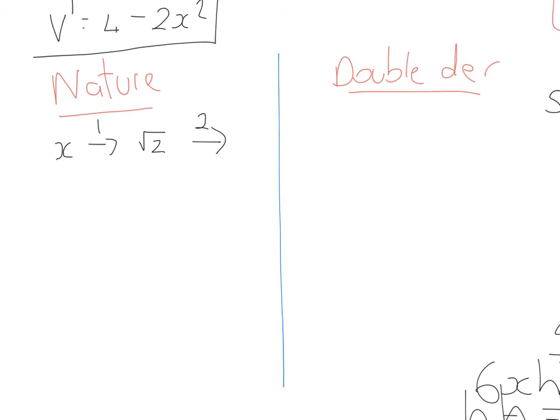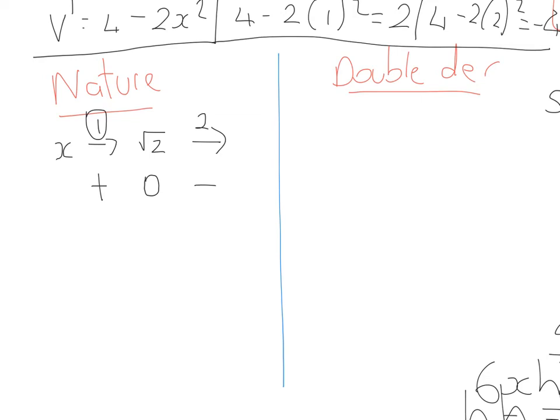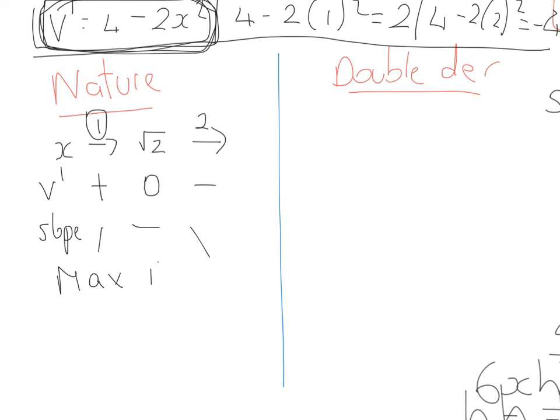So if I start with 1, that would be 4 minus 2 lots of 1². We can see that that has got a result of 2, and that is a positive result. If I then think about subbing in x equals 2, that would be 4 minus 2 lots of 2². That's 4 minus 8, and that's -4, and that is a negative result. The reason why I'm subbing into here is that's the differentiated function, which will give me gradient, and it's the gradient that I'm looking to focus on. So I can see then that the slope is as such, and that is a max turning point at x equals √2.